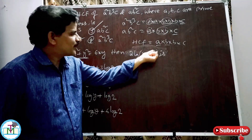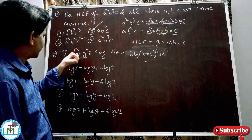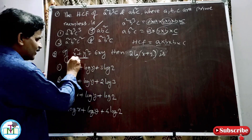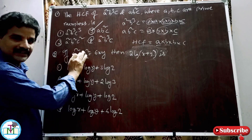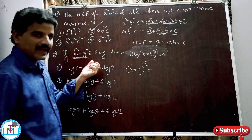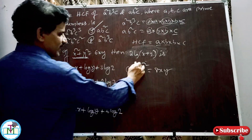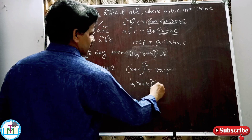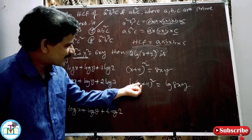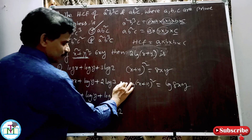Using the (a+b)² formula: (x+y)² = x²+y²+2xy. Since x²+y²=6xy, adding 2xy to both sides gives (x+y)² = 8xy. So log(x+y)² = log(8xy). Using the formula log(xⁿ)=n·log(x), the power 2 becomes a coefficient: 2log(x+y) = log(8xy).